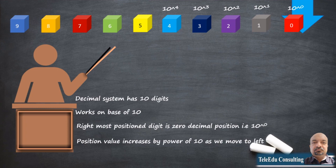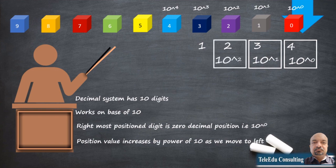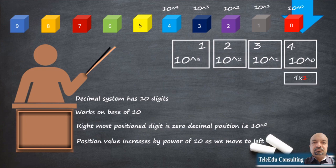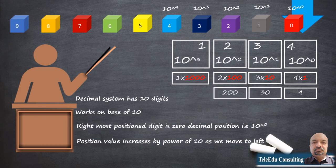Let us take the decimal number 1234 and apply the digit position base logic. The rightmost digit is 4, so it takes position 0. Likewise, digit 3 takes position 1, digit 2 takes position 2, and digit 1 takes position 3. The base 10 value for position 0 is 1, position 1 is 10, position 2 is 100, and position 3 is 1000, as seen in the slide. The values of the digits at their respective positions are added to arrive at the final sum of 1234 — the same number we took as an example.